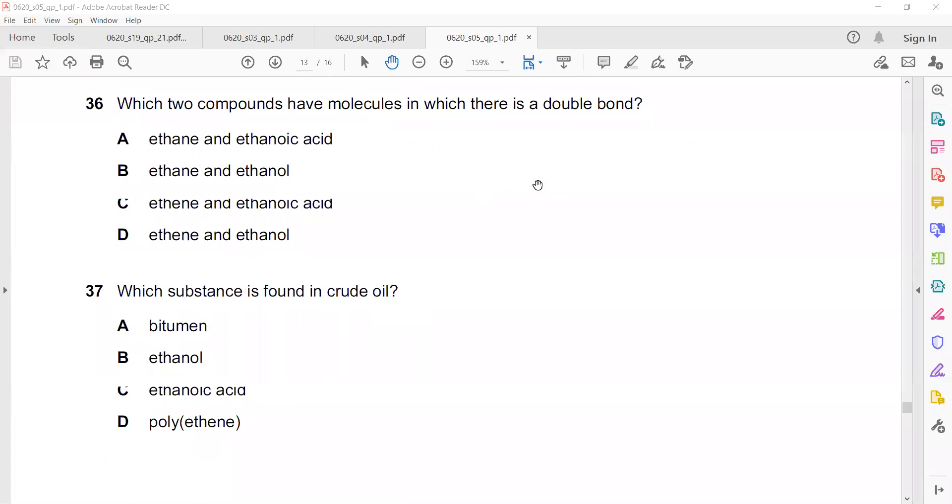Question 36. Which two compounds have molecules in which there is a double bond? It's better you draw the structure. Ethane means two carbon atoms and hydrogen. Ethanoic acid means two carbon atoms and C double bonded with O and H. Ethanol. And ethene means C double bonded to C and hydrogens. So ethene and ethanoic acid have a double bond. Rest other molecules do not have any double bond.